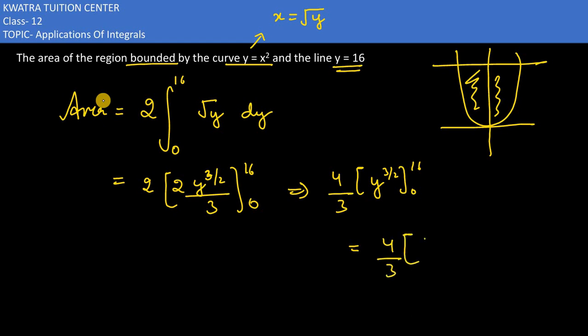So 4 by 3, value of 16 to the power 3 by 2, minus 0 to the power 3 by 2. Close the bracket. Now let's simplify so that we can get the answer here. So 4 by 3 is there, 16 to the power 3 by 2 minus 0 to the power 3 by 2.